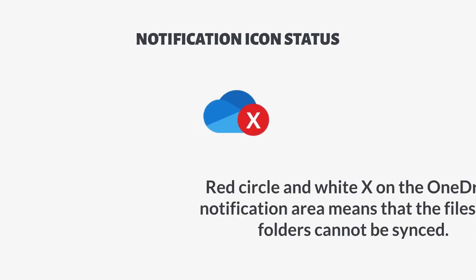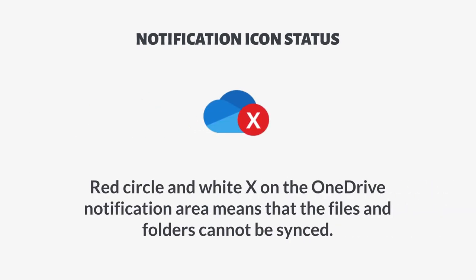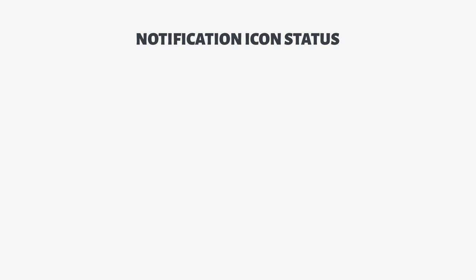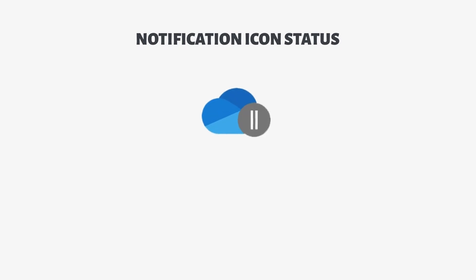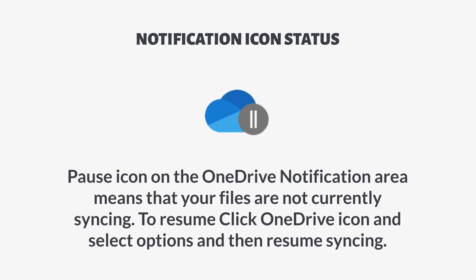A circle with a white X on the OneDrive notification area means that the files and folders cannot be synced. A gray OneDrive cloud means you're not signed in or the OneDrive setup was not completed. A pause icon on the OneDrive notification area means that your files are not currently syncing.